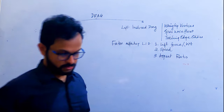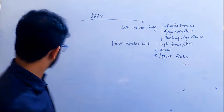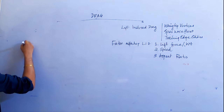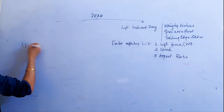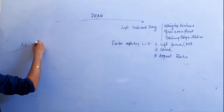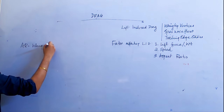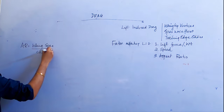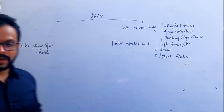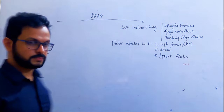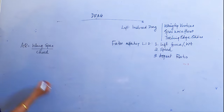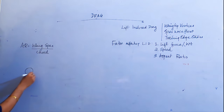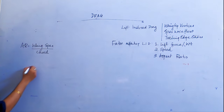What is aspect ratio? It is the ratio of wingspan to wing chord.